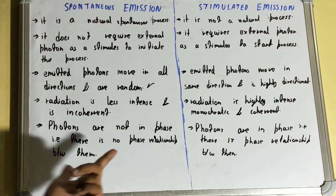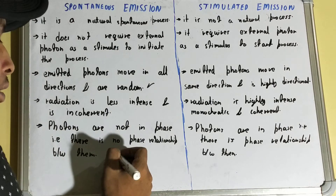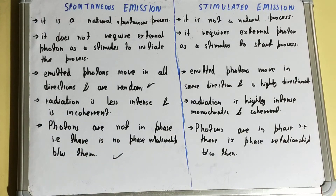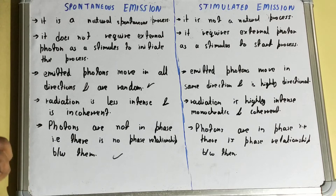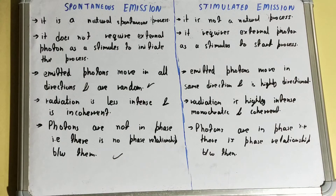In spontaneous emission, the photons are not in phase — there is no phase relationship between them, meaning no constant phase difference exists. In stimulated emission, however, the photons are in phase: there is a constant phase difference between them. This was all about the difference between spontaneous emission and stimulated emission.